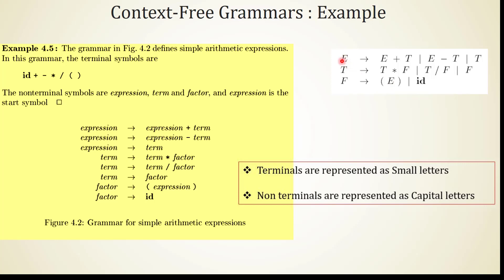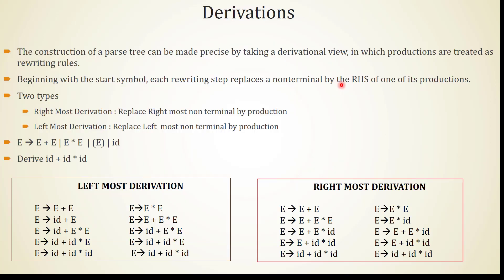The same grammar is represented in a shorter form: instead of expression I use E, instead of term I use T, instead of factor I use F. Expression can be of three types: E plus T, E minus T, or T itself — represented as E → E+T | E−T | T. When writing a context-free grammar, terminals are represented as small letters and non-terminals as capital letters. Non-terminals are also known as variables.